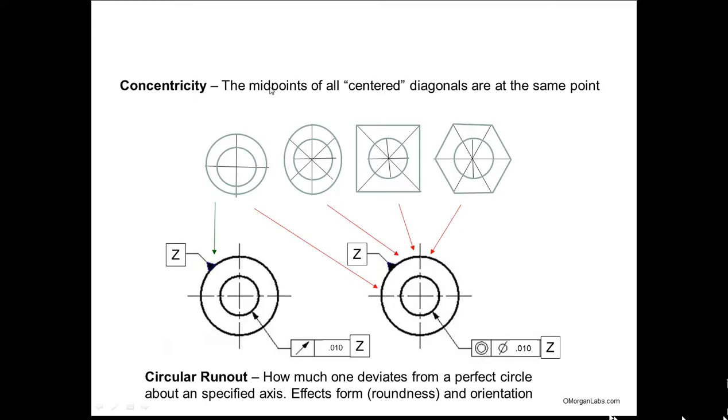Concentricity, the definition: the midpoints of all centered diagonals are at the same point. So you make a diagonal for, in this example, the square, and you make a diagonal for the circle. They should all intersect at the same point. They're concentric.